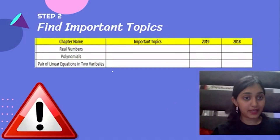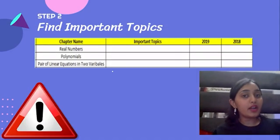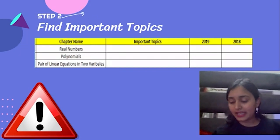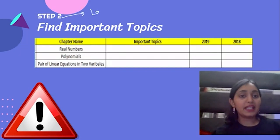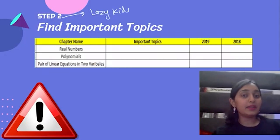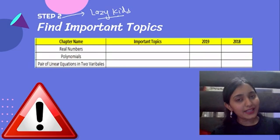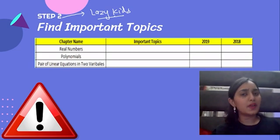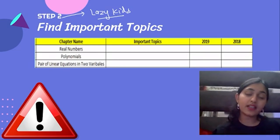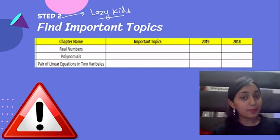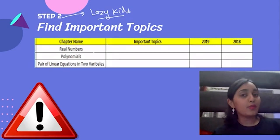The next step is to find the important topics. This is a special step especially for kids who were a little lazy or couldn't put in much effort during the year. It may be possible that some kids had personal reasons. If you haven't been able to study much so far, then this second step is very important for you.